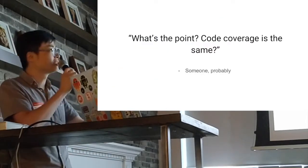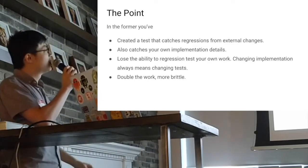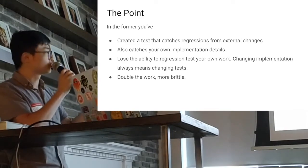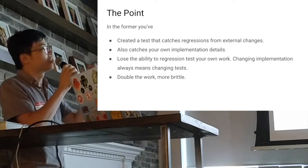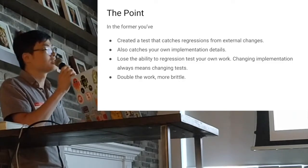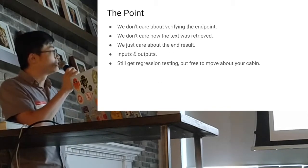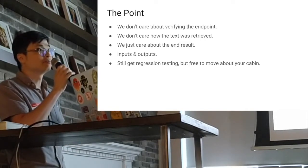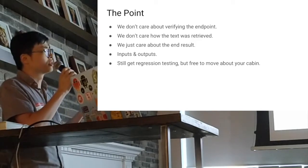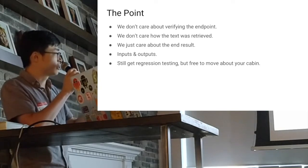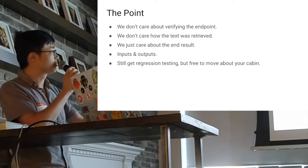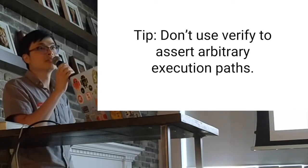What's the point? The formal thing is: you create a test to catch regression from external change. When your test caches your own implementation details, that's not what we want — you lose the ability to regression test your own stuff. Changing implementation always means you'll change your test, doubling your work. We don't care about verifying the endpoint or how the data was retrieved; we care about the end result — that the display message equals 'success.' It's input and output, very straightforward. The tip: don't use verify to assert an arbitrary execution path.